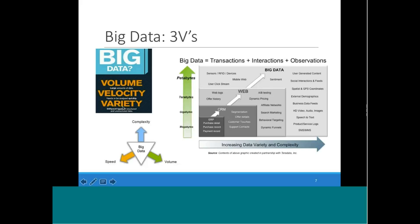Volume, velocity, and variety — complexity, speed, and volume — with dimensions increasing from different data sources. Do you feel you are in a big data problem only when the scale of data is petabytes or terabytes? No. It depends on your existing architecture's capacity and capability. If your existing architecture fails to manage the existing or predicted volume for next year, you have to plan and align your architecture accordingly.